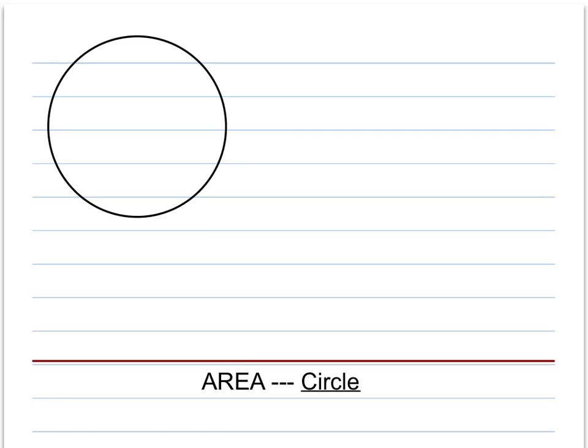There are two main formulas when dealing with circles. One of the formulas deals with circumference, let's call it C, and the other deals with area, let's call it A.